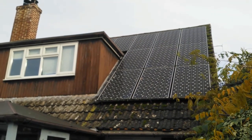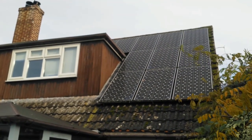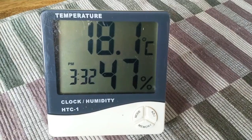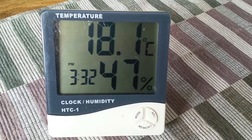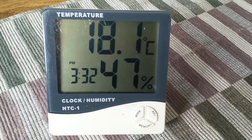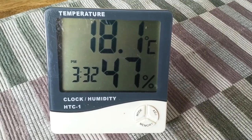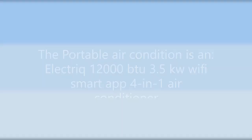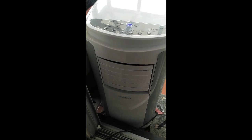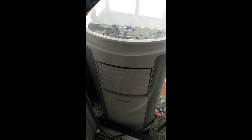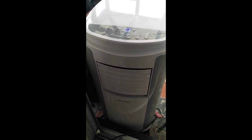There's a southwest-facing solar panel array with a total of 13 panels, a couple out of view due to the dormer. The temperature is 18.1 degrees Celsius at 47 percent humidity. I'm going to run the electric IQ air conditioner for one hour and see what change we see in the living temperature.